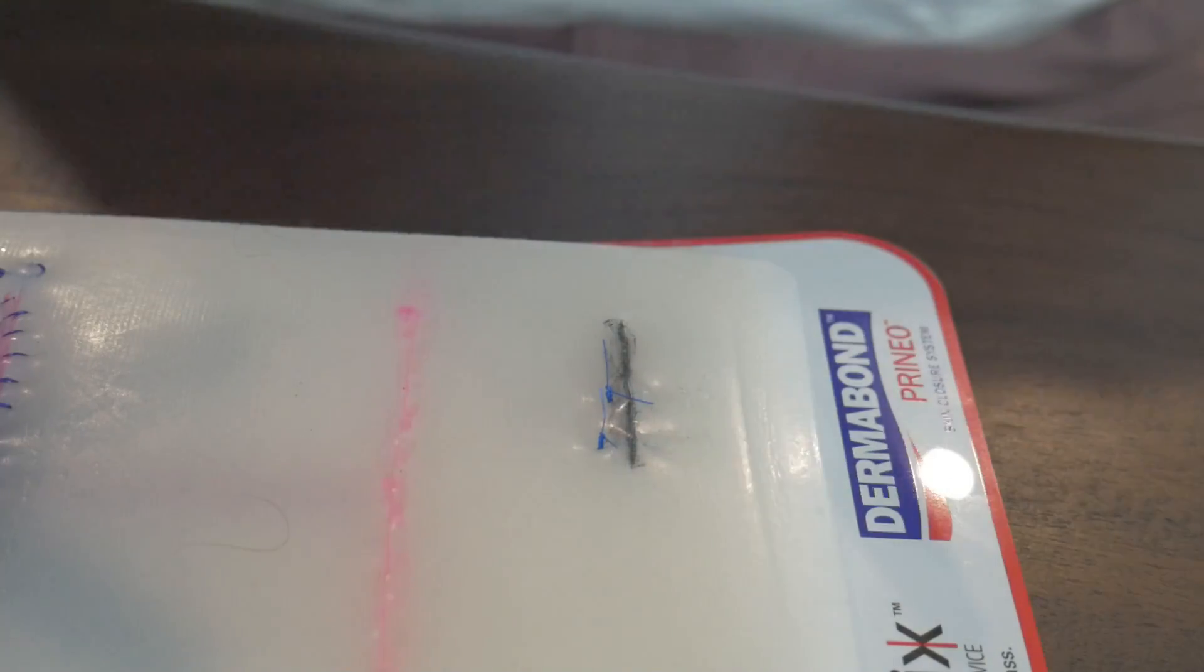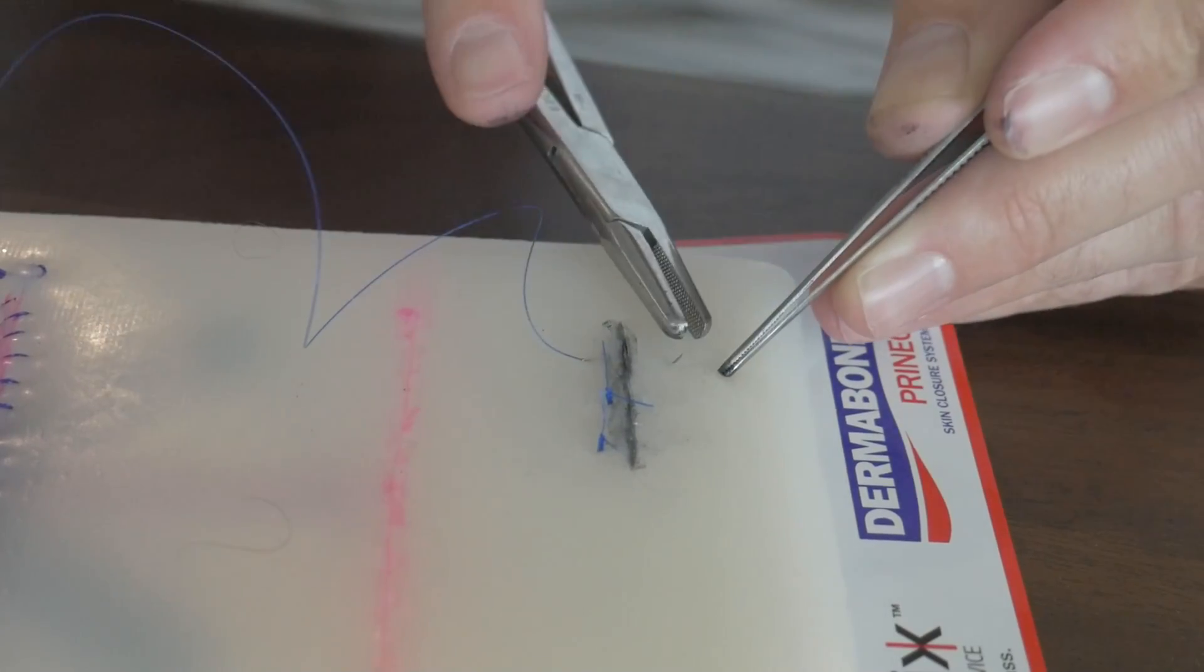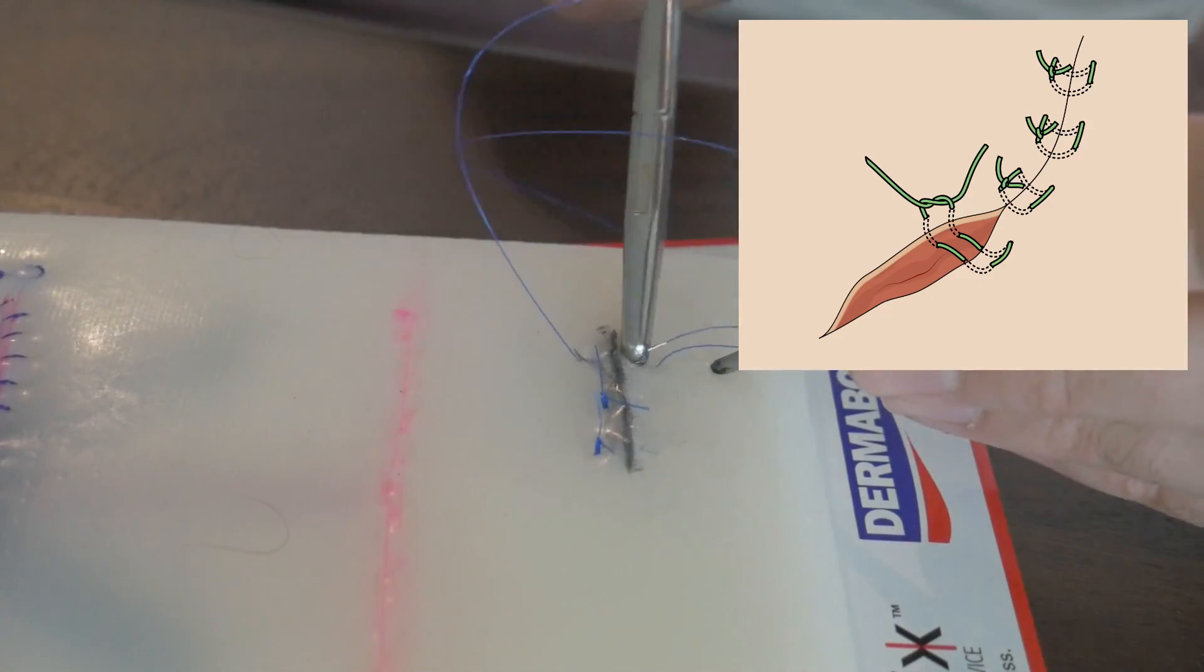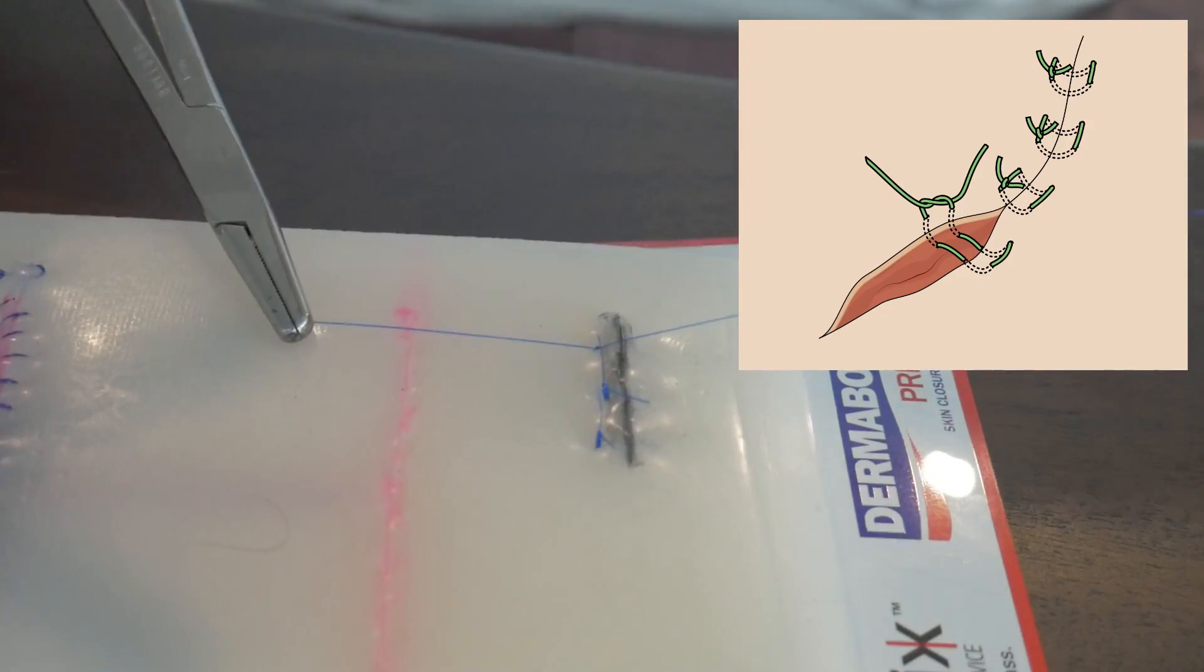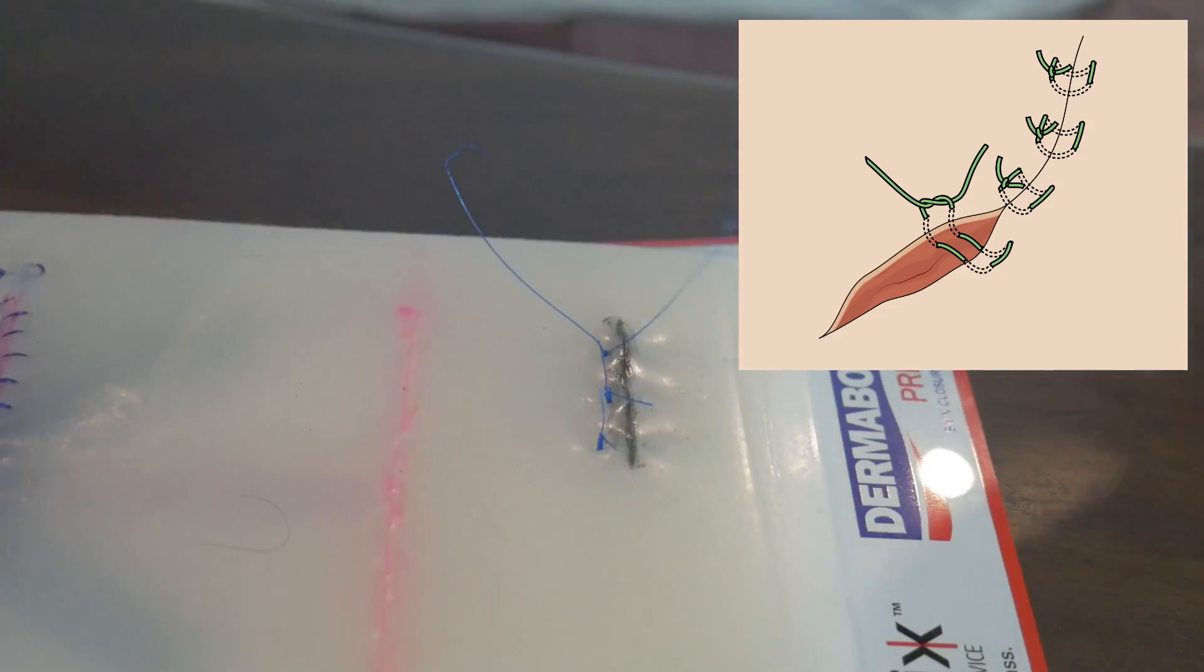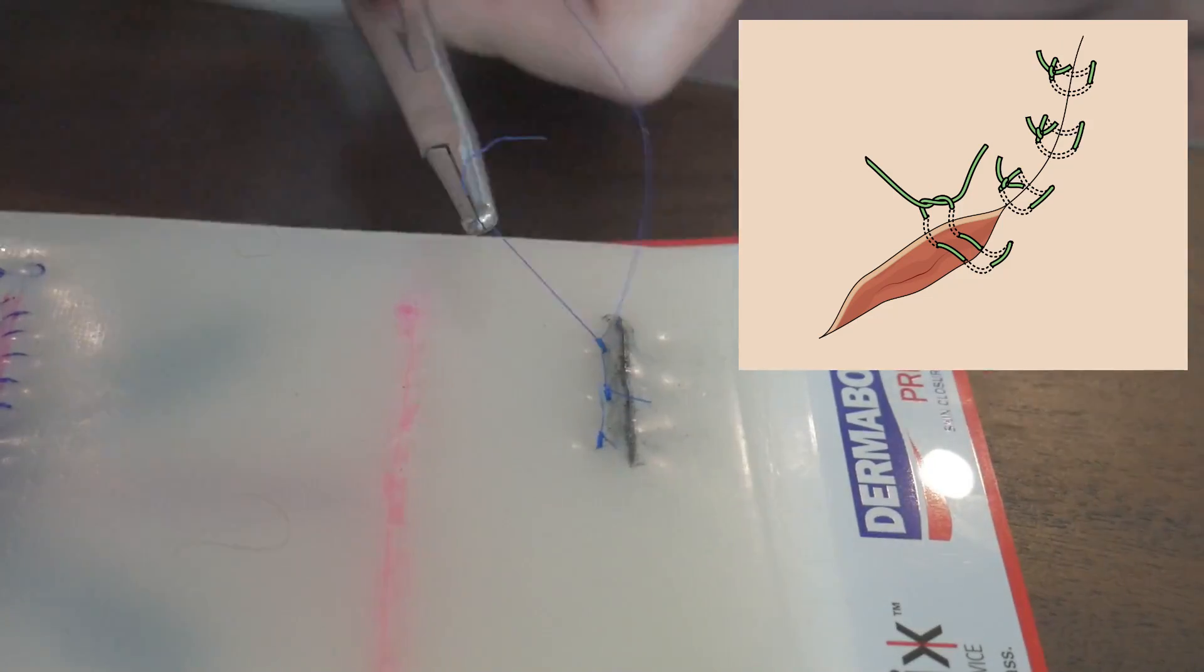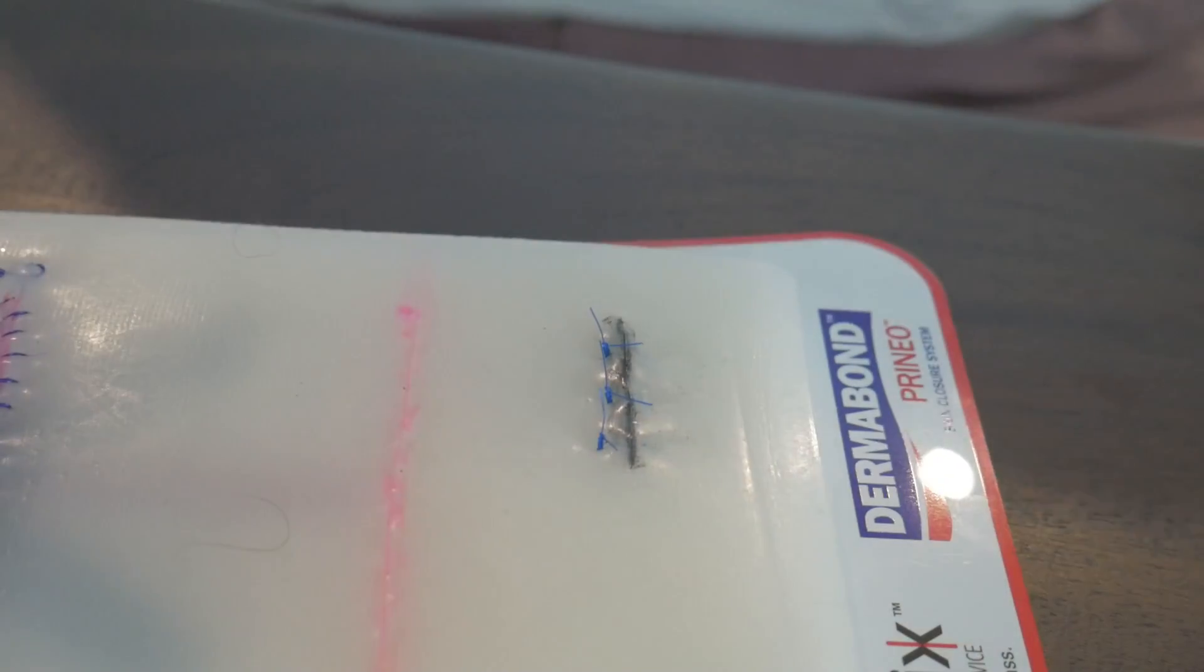Now there is also a second variant of this called the horizontal mattress stitch. I'll put a picture of the horizontal mattress stitch up here in the upper right. I just don't have time to do all of these. It would be a super long video. It already is a super long video. But yeah, so that's a horizontal mattress, very similar, but you're just going in and out on one side and in and out on one side, versus this, the vertical mattress.